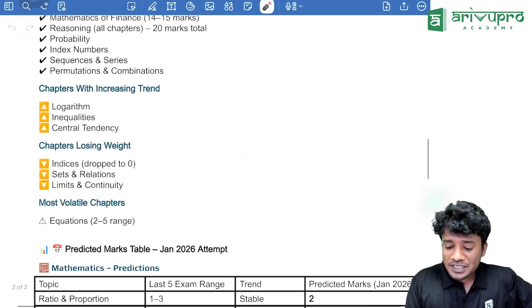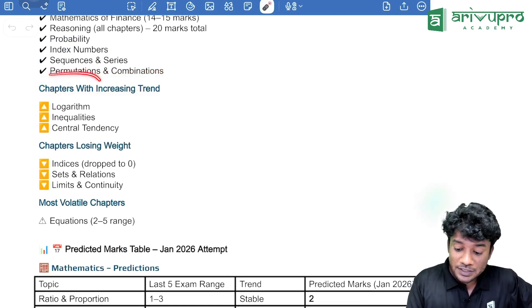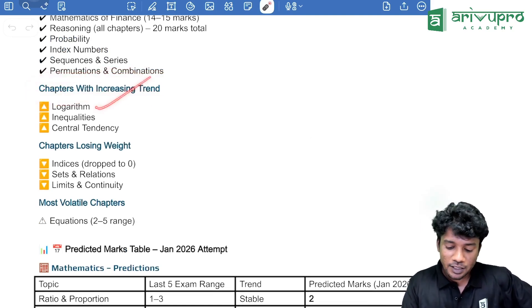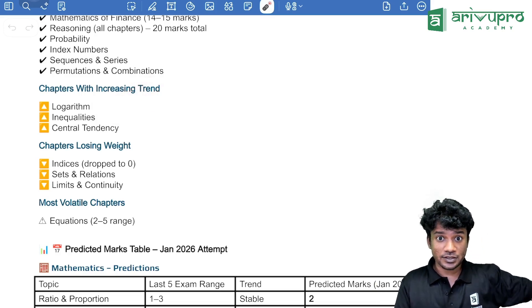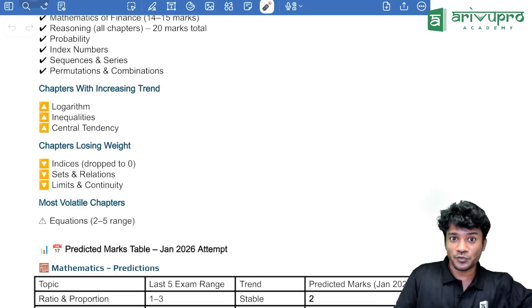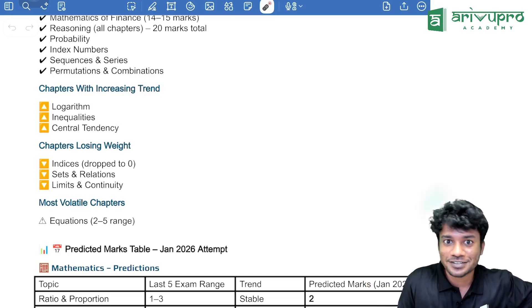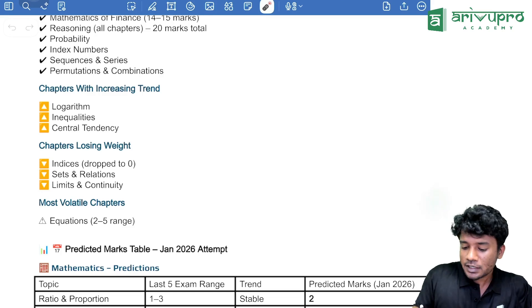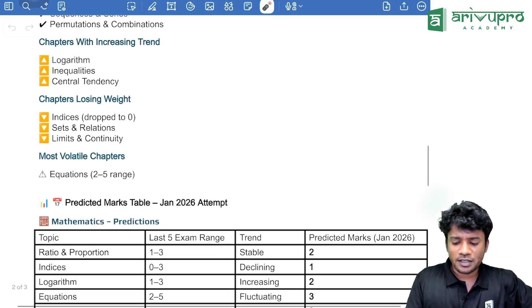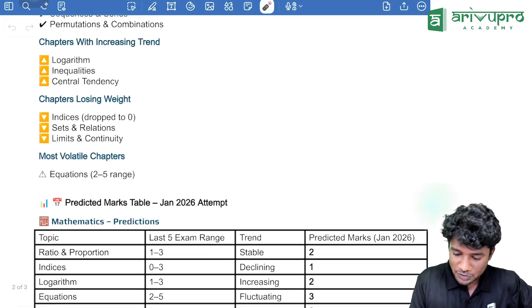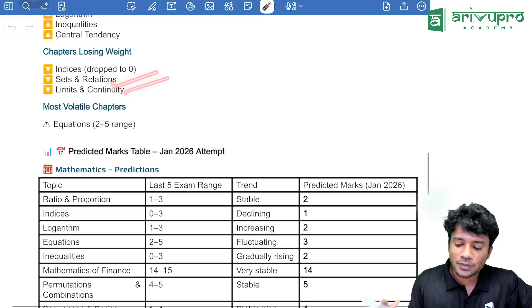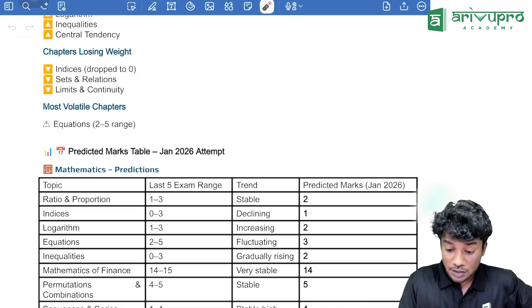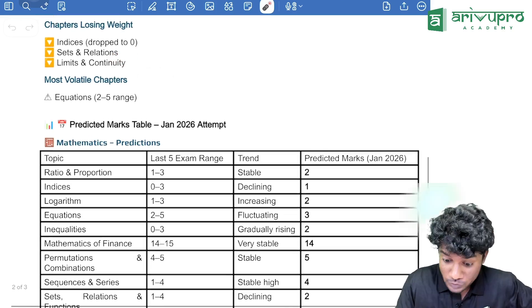Then, chapters with increasing trend nowadays or topics with increasing trend nowadays is logarithm, inequality and central tendency. Why central tendency? Because there was a change in the syllabus, sampling was added. So, we can say that more than this question, central tendency, the weightage is increasing. Then, losing weightage is, actually, if you ask me, some mistake is there. Indices is not there. Set relation, limits and continuity, there is no. Actually, it is losing weight.